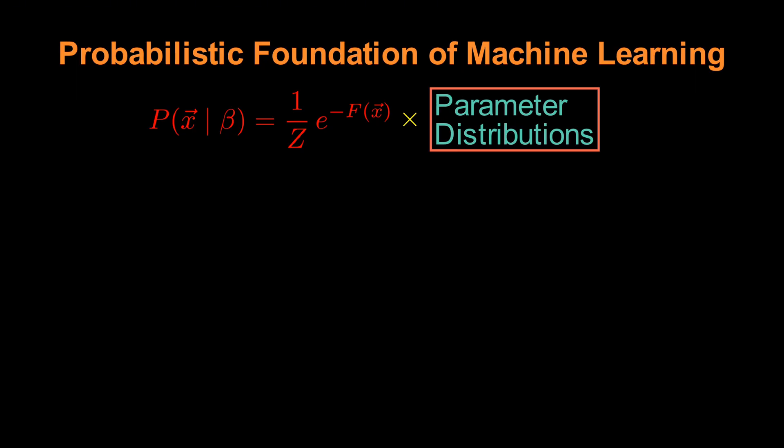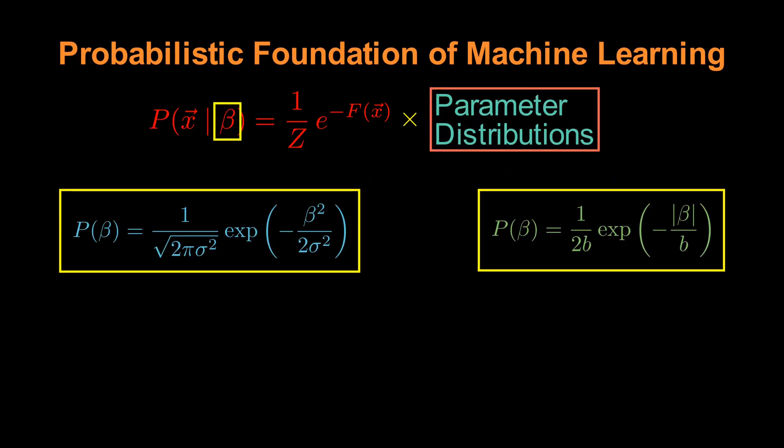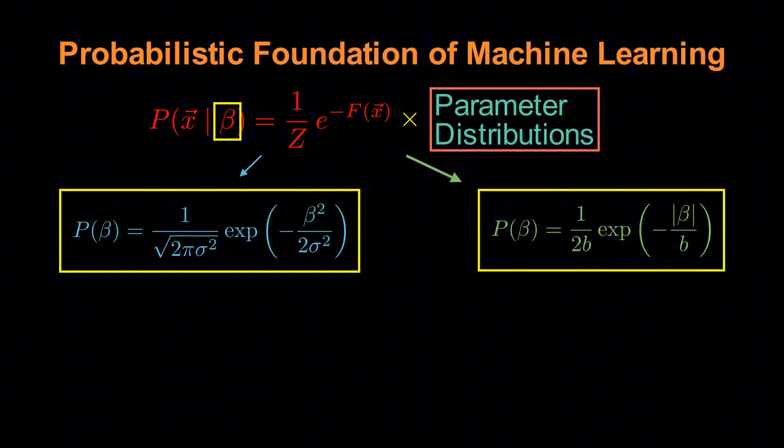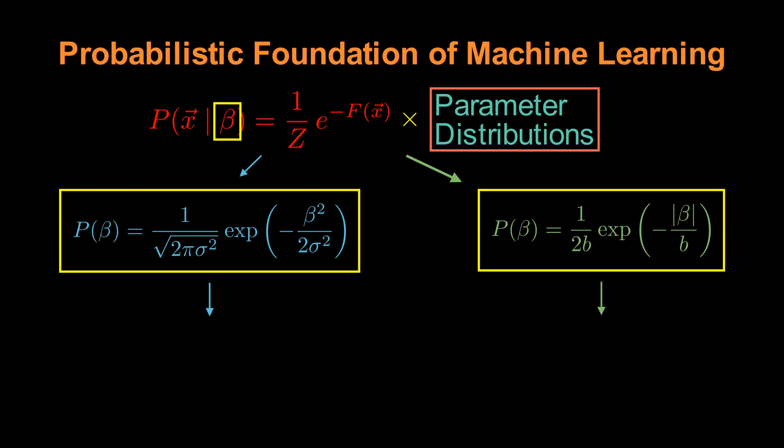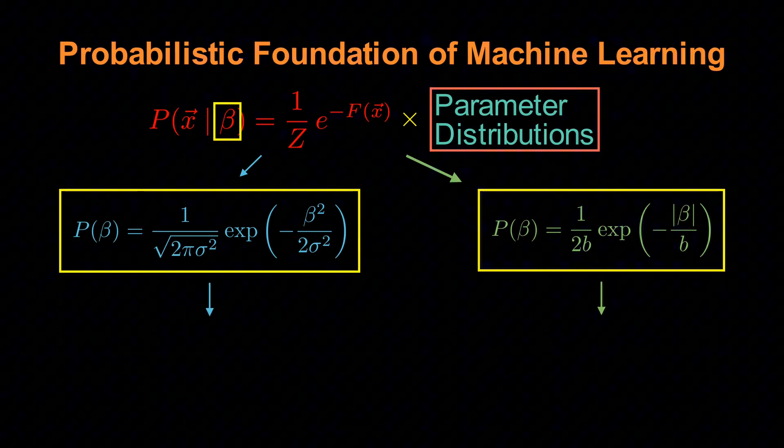Common choices for the parameter vector, which we show using the beta symbol, are 1, the Gaussian distribution, and 2, the Laplace distribution. When we multiply these distributions into our model probability, we get modified total probabilities that look like one of the following two.